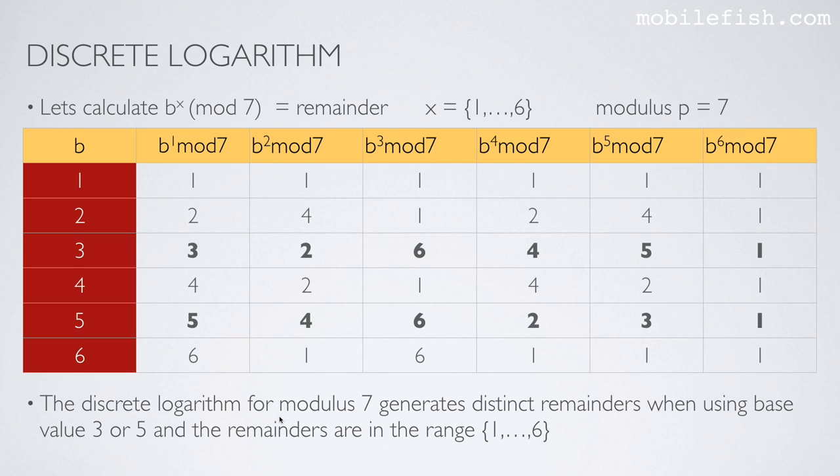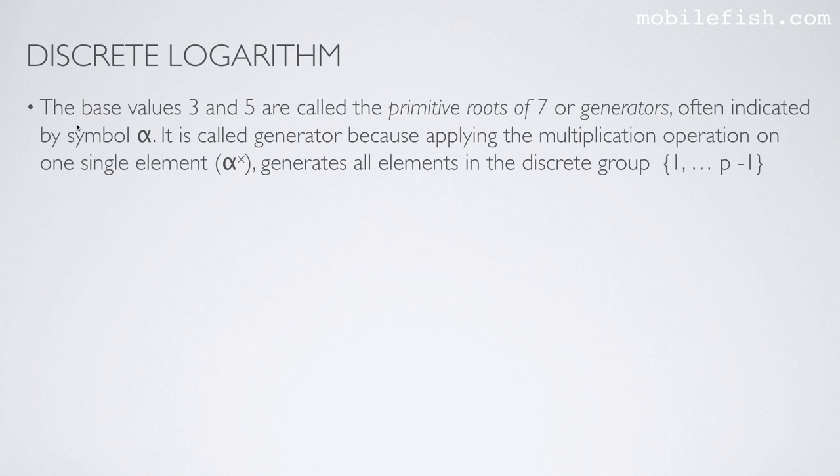The discrete logarithm for modulo 7 generates distinct remainders when using base value 3 or 5 and the remainders are in the range 1 till 6. The base values 3 and 5 in the previous example are called the primitive roots of 7, or generators, often indicated by symbol alpha. It is called generator because applying the multiplication operation on one single element, alpha to the power x, generates all elements in a distinct group, 1 till p minus 1.